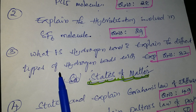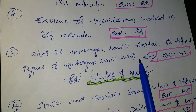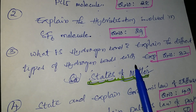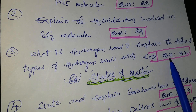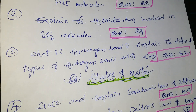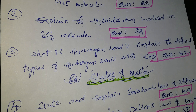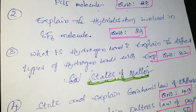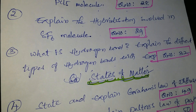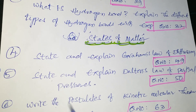Next question: what is the hydrogen bond? Explain the different types of hydrogen bonds with suitable examples — that is question number 32. The material is from the textbook and other sources. Next lesson is states of matter.